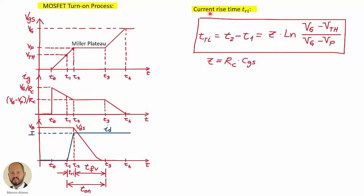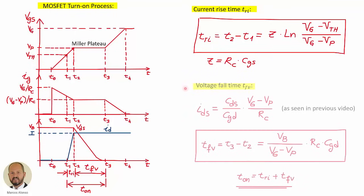Let's start by the current rise time T sub RI. Looking at the waveforms, this is the interval between T1 and T2, when the current is rising. This corresponds to the interval in which the voltage between the gate and the source goes from the threshold voltage — when the channel becomes conductive — up to the Miller plateau voltage V sub P. This is an exponential evolution in which we are charging the gate-to-source capacitance through the charging resistor RC. We can calculate this time interval using the equation seen before, and this is the time constant needed in this case.